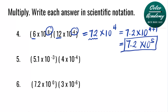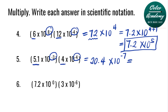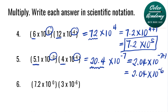Question number five: 5.1 times 10 to the power of negative 3, multiplied by 4 times 10 to the power of negative 4. First, multiply the a values 5.1 and 4, which is 20.4. Add the powers negative 3 and negative 4 to get 10 to the power of negative 7. We simplify 20.4 as 2.04, and add 1 to the power. The answer is 2.04 times 10 to the power of negative 6.